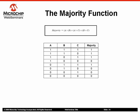Let's consider a system with three inputs. The majority function of these three inputs will return whichever value — it could be true or false — that occurs at least twice.